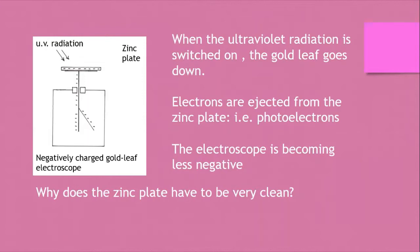There's a clean zinc plate which is put onto the cap. Ultraviolet radiation — remember, ultraviolet: high frequency, short wavelengths, quite high energy photons — when the ultraviolet radiation is switched on, it's noticed that the gold leaf goes down. Why? Electrons are being ejected from the zinc plate. These ejected electrons are the photoelectrons. So the electroscope is becoming less negative, and there are fewer electrons all over the electroscope including the stem and the leaf, so the gold leaf goes down.